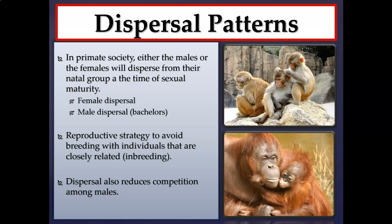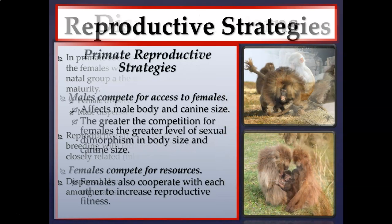Male dispersal is seen a lot in bachelor groups and one-male multi-female groups — once males reach sexual maturity they disperse to another group. This dispersal pattern is essentially a reproductive strategy to avoid breeding with closely related individuals, also known as inbreeding. Dispersal also serves to reduce competition among males, especially in one-male multi-female and multi-male multi-female groups, preventing both inbreeding and violence.